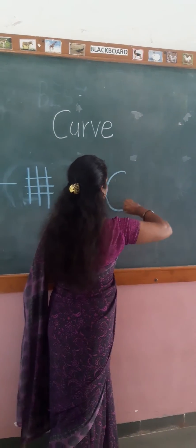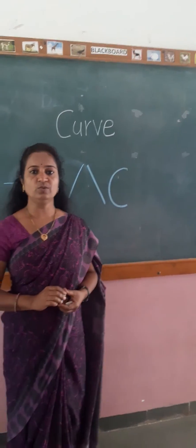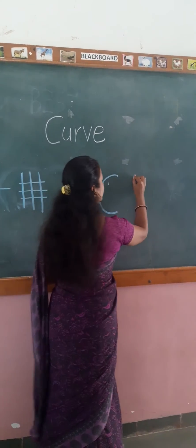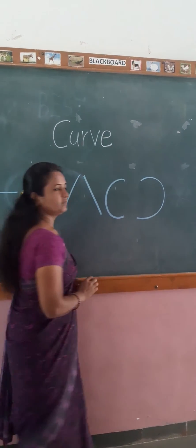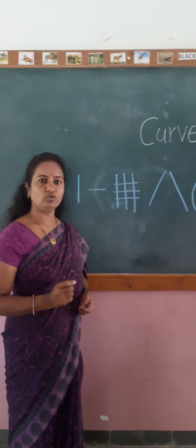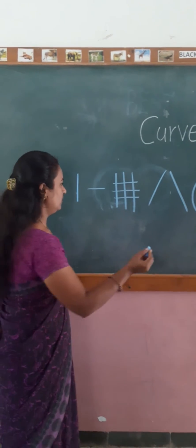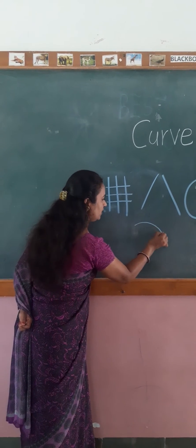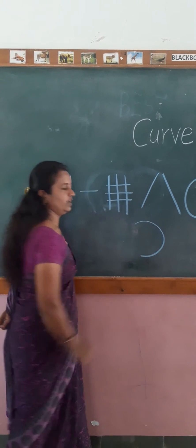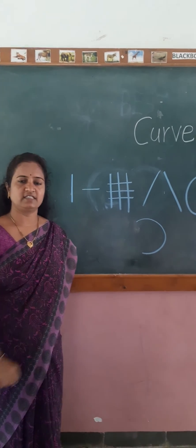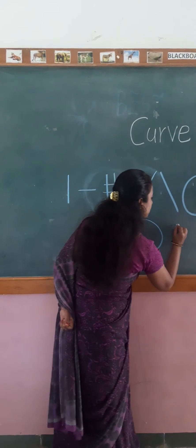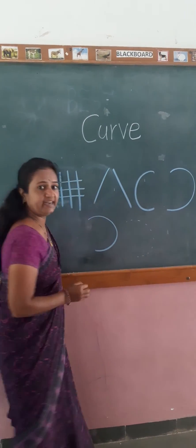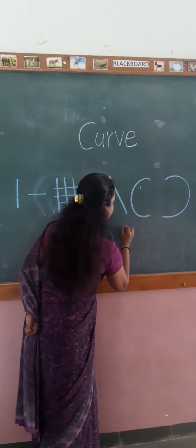Today we are going to learn curve, but it is a right side open curve, in this way. How are you going to write curve C? How to draw curve? Put your crayon and do like that. If it is hard, then draw a dotted line and press it.